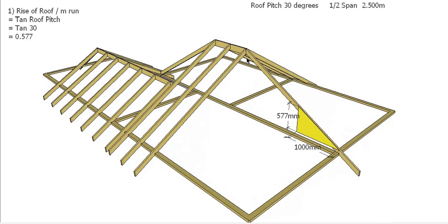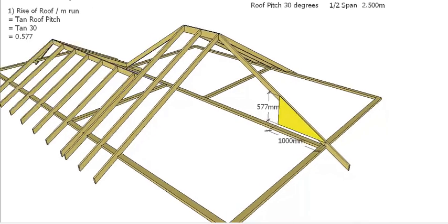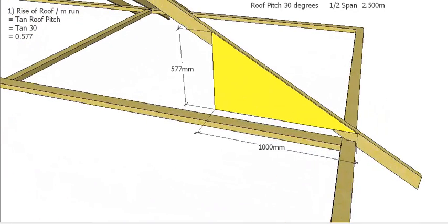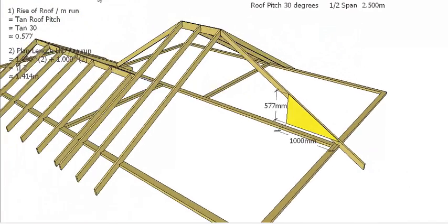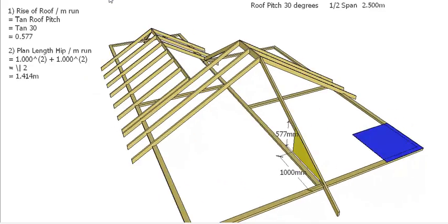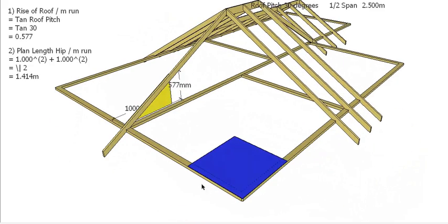That's alright for the rafters, but we need to look at the actual hips. For the hip itself, if we have a square that is a meter by a meter, we need to know this distance here where the hip is going to run 45 degrees to the corner.